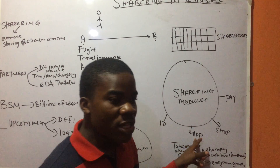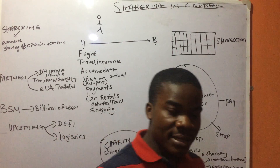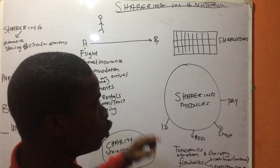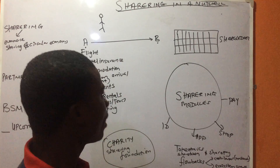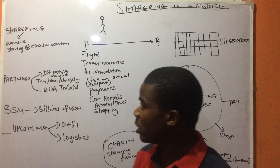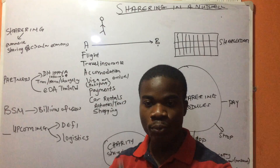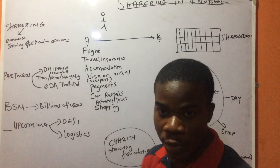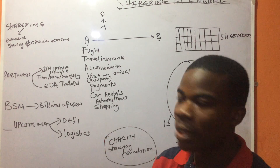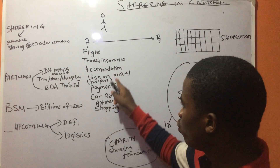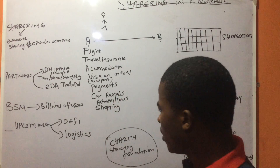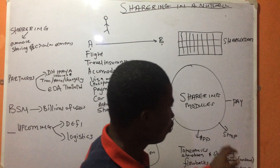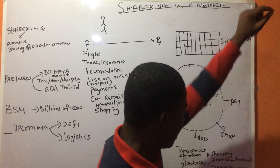The Sharing app encompasses everything you need. Imagine you want to travel from point A to point B internationally — you need to book flights, get travel insurance, book accommodation at a hotel or Airbnb, cover visa on arrival, handle payments, and even do shopping. All these things are covered within the Sharing app.